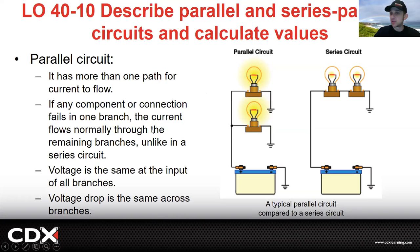So make sure you watch those videos. Those videos are great. They have better animations and stuff than I can do right now on here. So check out those videos of how they work and how they explain it. A parallel circuit has more than one path for current to flow. So it comes up here, can branch off here and branch off here back to the ground, whereas a series circuit has one path. If any component or connection fails in one branch, the current flows normally through the remaining branches, unlike in a series.